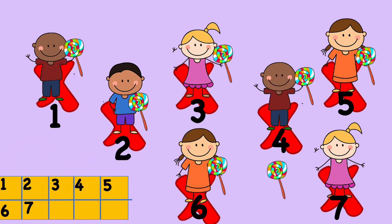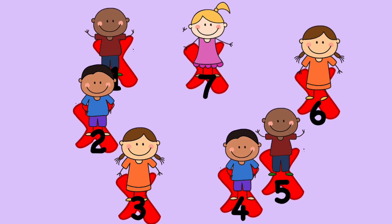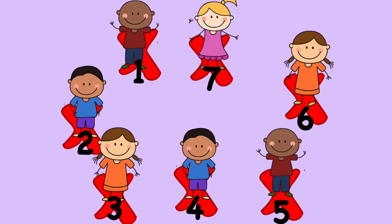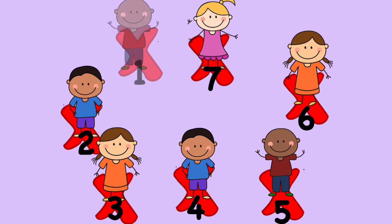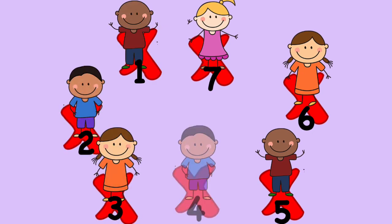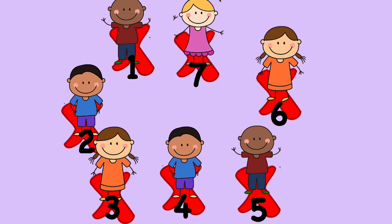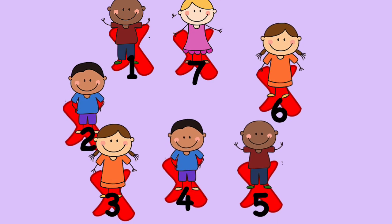Let's arrange the crosses in a different order and let each child get a spot on one cross. Let's count: 1, 2, 3, 4, 5, 6, 7. Now let's put the children in pairs — in one pair there are two children.